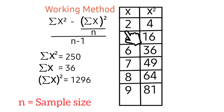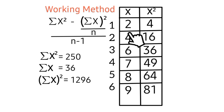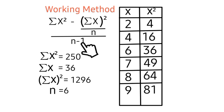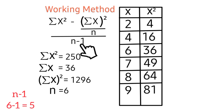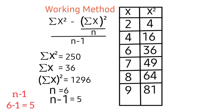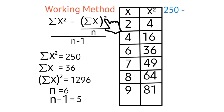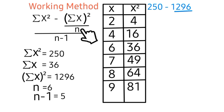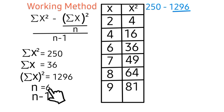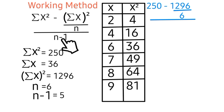We can get n by count: 1, 2, 3, 4, 5, 6 — so n equals 6. We also have n minus 1; since n is 6, n minus 1 equals 5. Now let's substitute all these values into our working formula: summation x² minus summation x squared, divided by n, all over n minus 1.